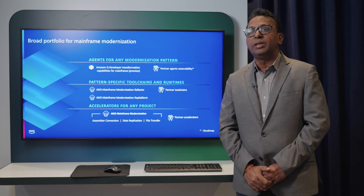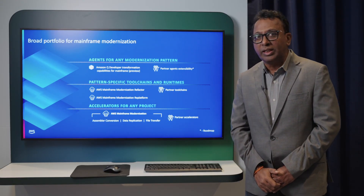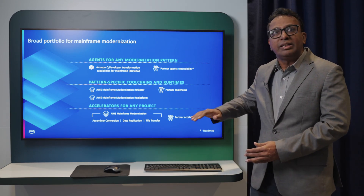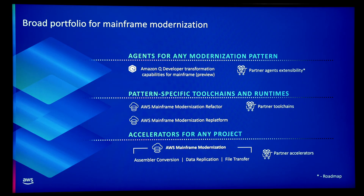How is AWS going to help in mainframe modernization? We offer a three-layer cake. At the bottom, we have accelerators for any project where you can do data replication, file transfer to AWS, and implement AI/ML solutions for augmentation. At the middle, you have tools for refactoring and replatforming with partners.